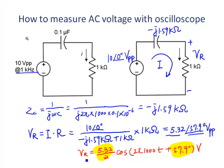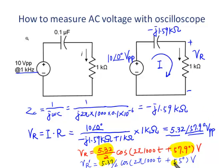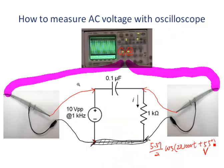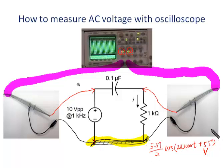So let's compare with the theoretical result. Our measured value — I'll use VR prime to indicate the measured value — is a peak-to-peak value of 5.37 volts. Divide by 2, that is the peak value. The phase angle is 55 degrees. So we have measured both the voltage magnitude and phase angle. To repeat the important procedure to measure AC voltage: build the circuit first, connect the first channel of the scope across the power supply, connect the second channel across the resistor since we are interested in the voltage across the resistor. It is quite important that the two probe ground leads must be connected together.